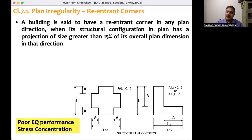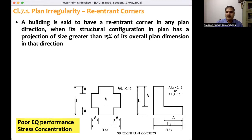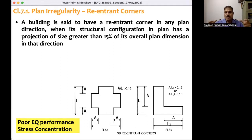Now what will happen when such a plan configuration is present? The earthquake performance of the building will be very poor because of stress concentration at the corners. Along the y direction, if there is vibration, the middle portion will be stiffer compared to the projected parts, and the same applies along the x direction. When there is a stiffness difference between the middle portion and the extended portion, the dynamic behavior will be different — there will be dissimilar dynamic behavior — and hence there will be stress concentration.